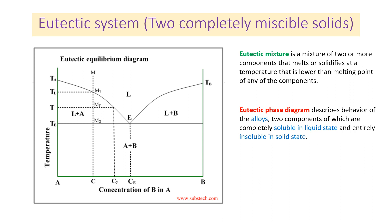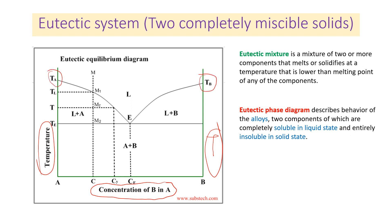Let's take a look at the eutectic phase diagram. On the x-axis we have the concentration of A and B, and on the y-axis we have the temperature on both sides. Here we have the melting point for component A, here we have the melting point for component B, and here we have the liquid region, the liquid plus component B, the liquid plus component A, and this one is the crystal form of components A and B.